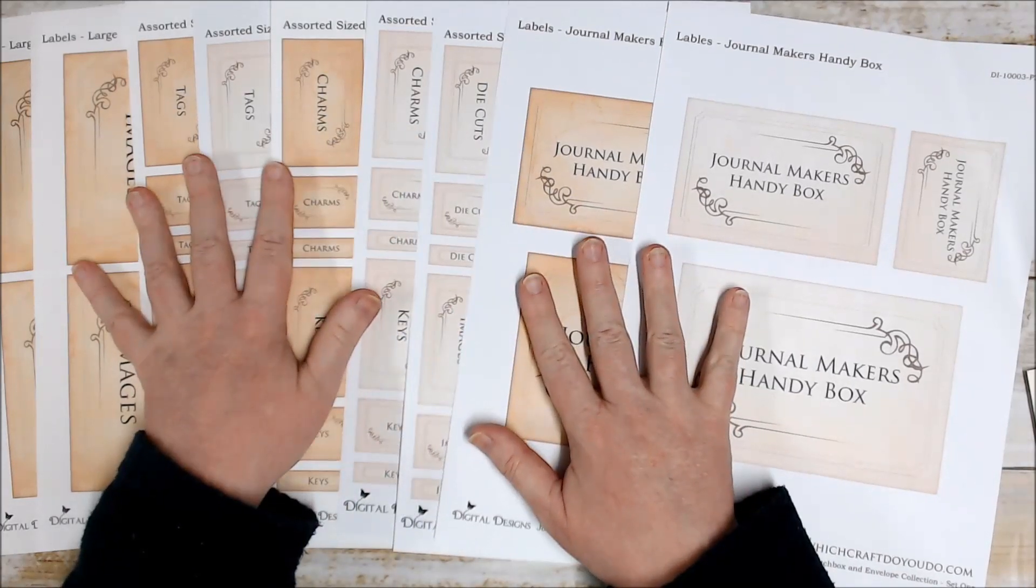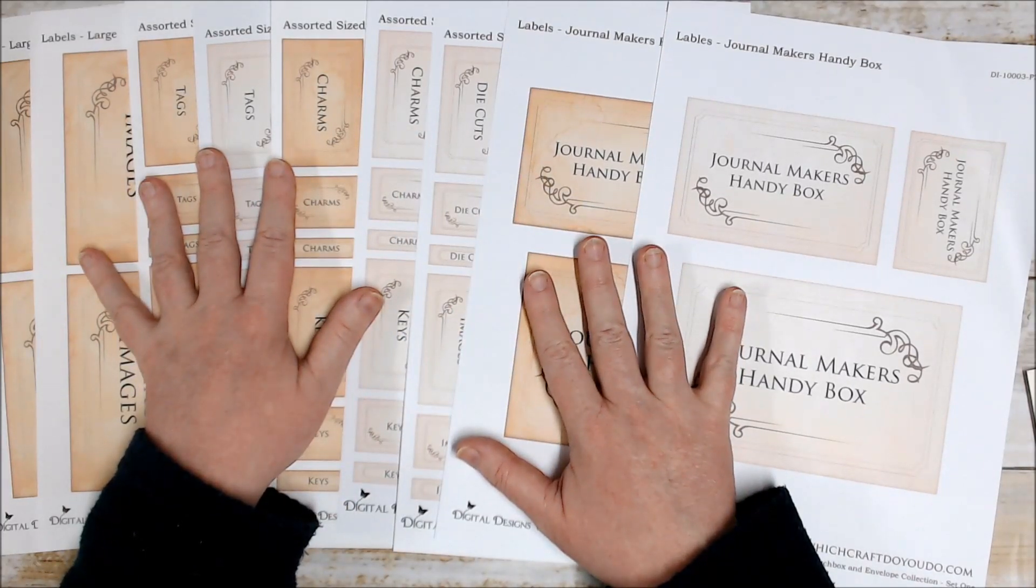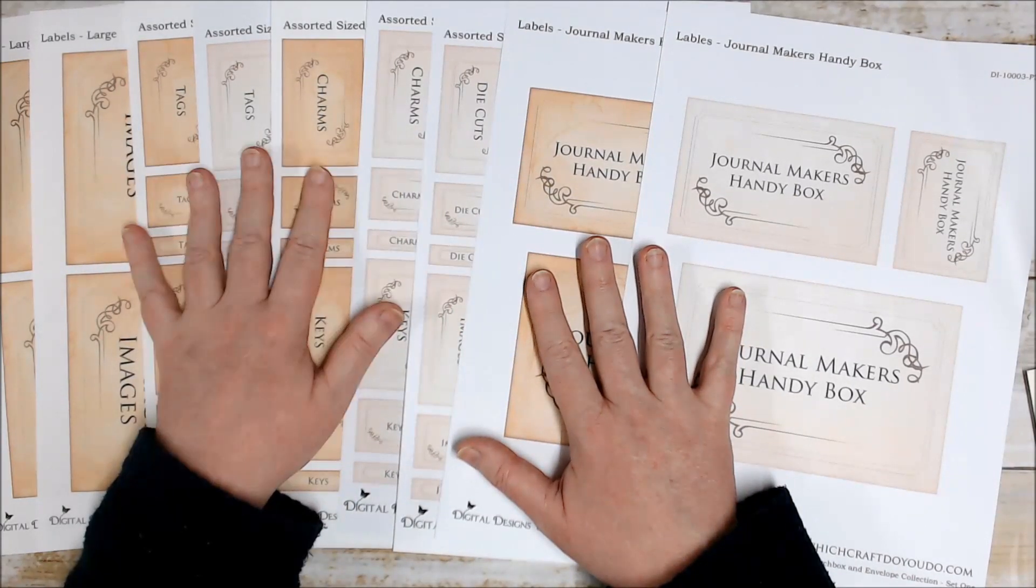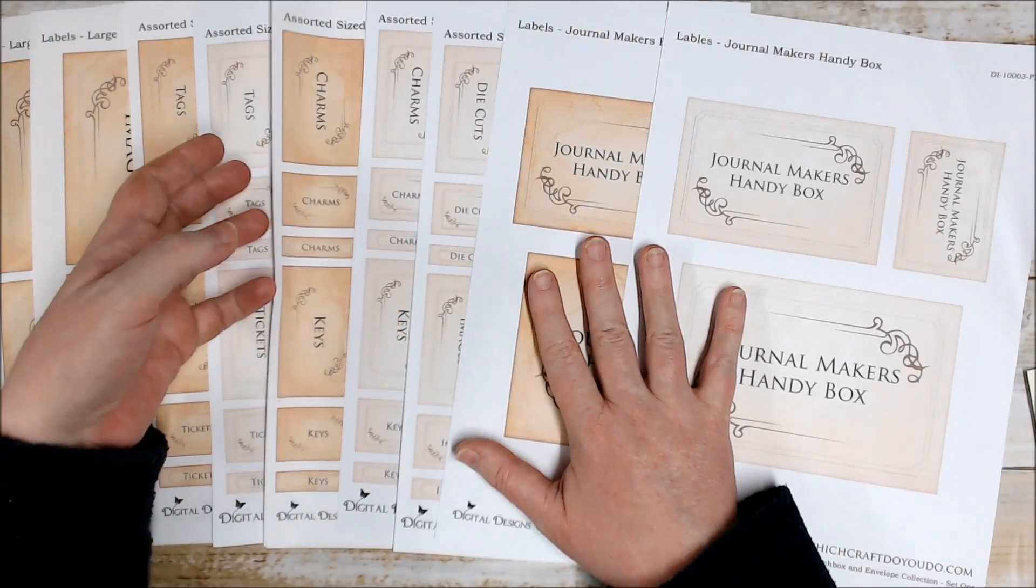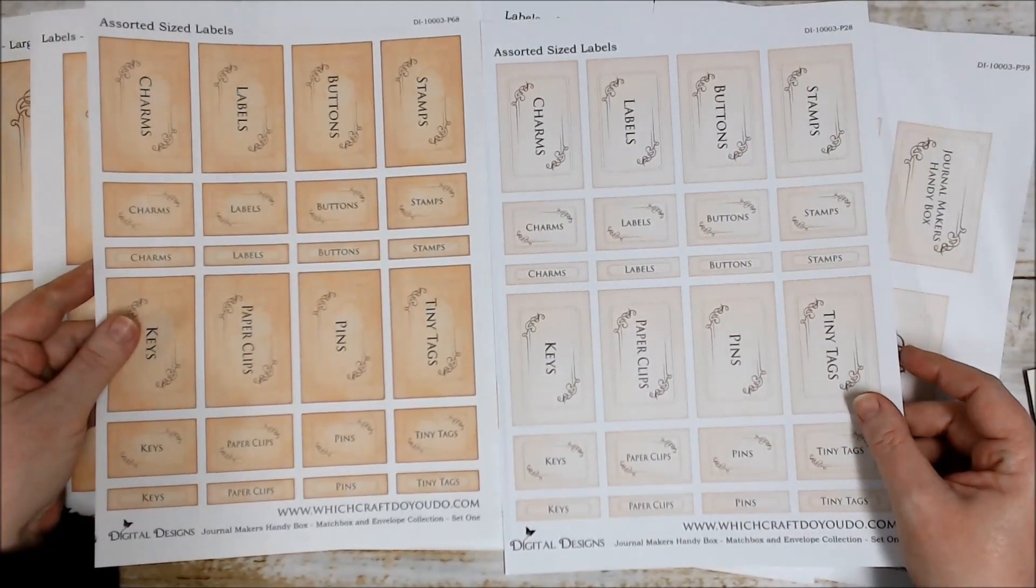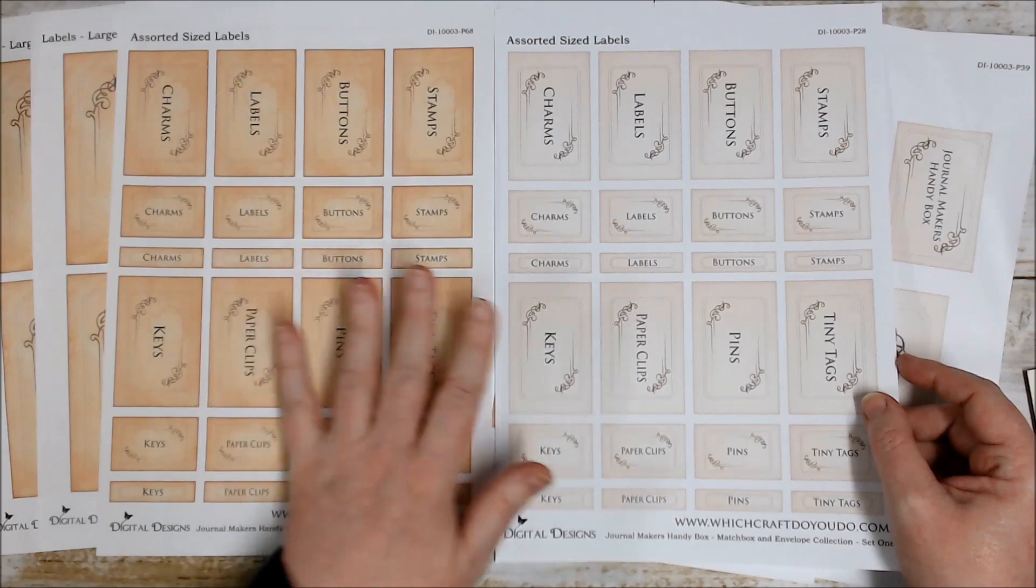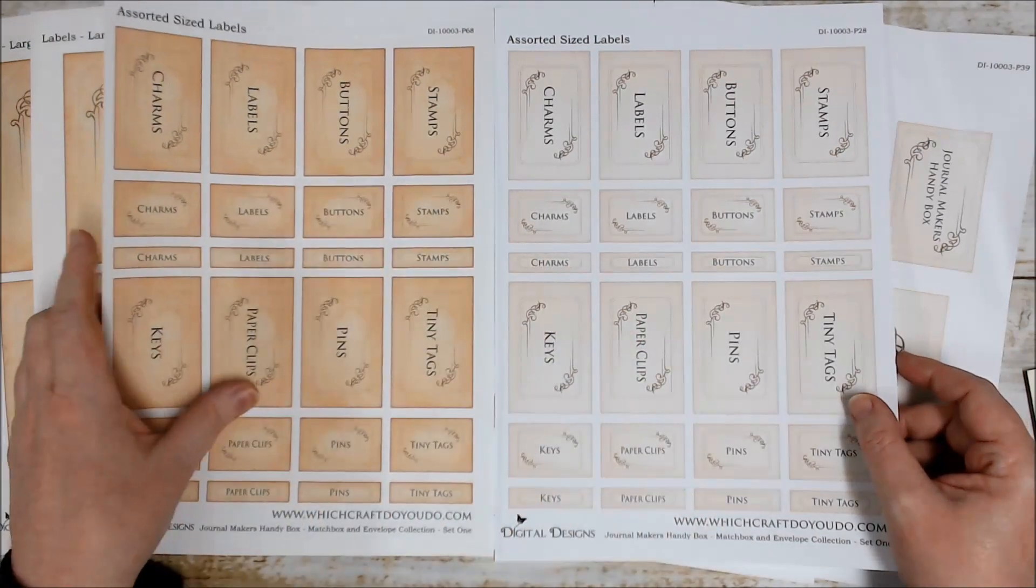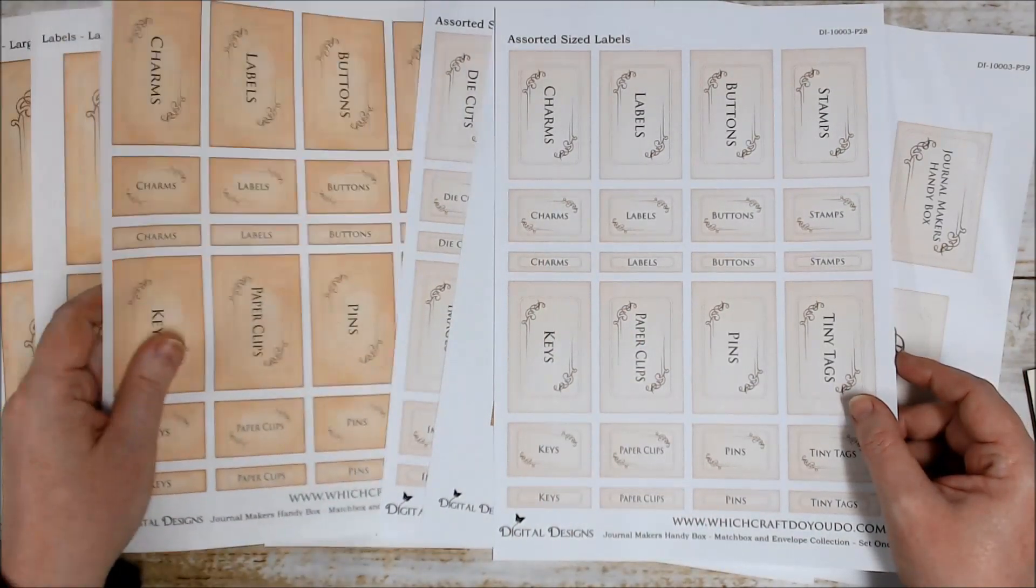Now I have a small selection of the pages from the kit in front of me here. The kit is actually 78 pages, and in the kit you get two different colors to choose from - a slightly darker one and the lighter one. You just choose whichever one suits you better for your project.